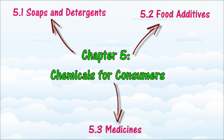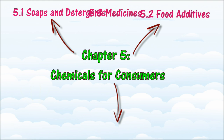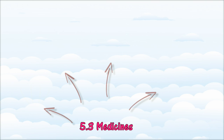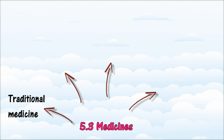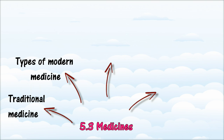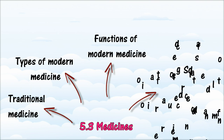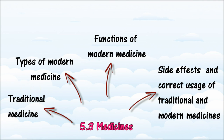In Section 5.3, we will learn about medicines. At the end of this section, you should be able to: state examples of traditional medicine, their sources and uses; state the types of modern medicine and their examples; state the functions of each type of modern medicine; describe the possible side effects of using modern and traditional medicine; and describe the correct usage of modern and traditional medicines.